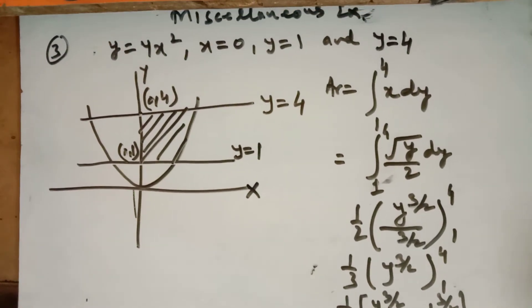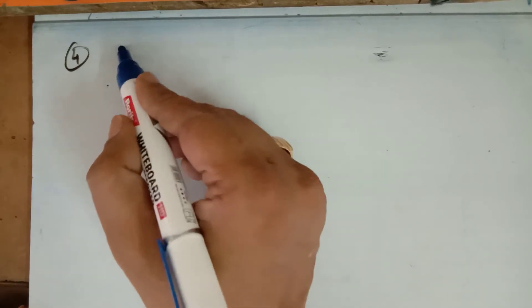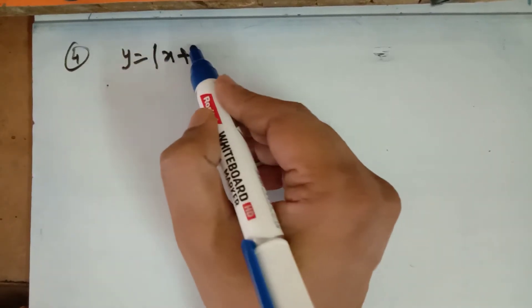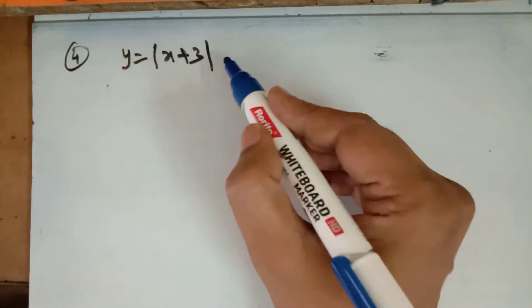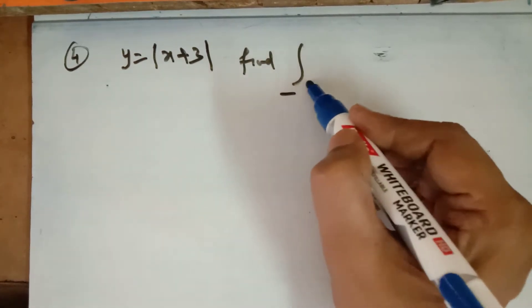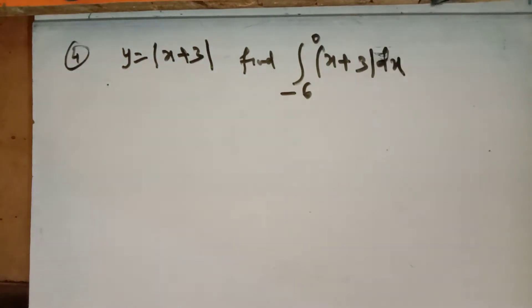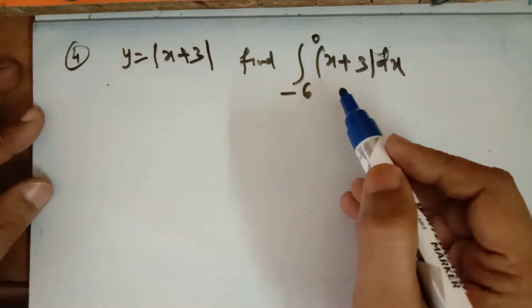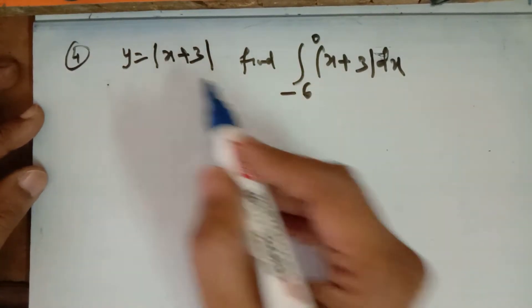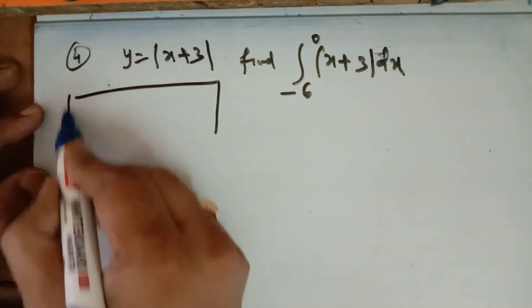Now question number 4 from the same miscellaneous exercise. You have to sketch the graph of y = |x + 3| and then evaluate the integral from −6 to 0 of |x + 3| dx. By just looking at it, you cannot immediately tell the shape of the curve, so you need to sketch the graph over the interval −6 to 0 using a solution set.